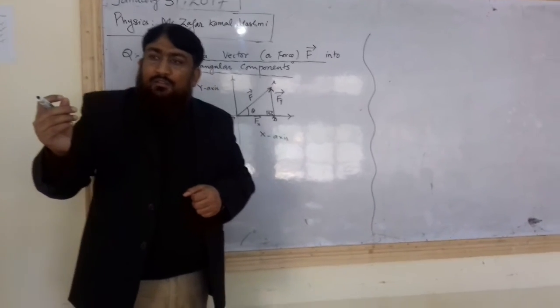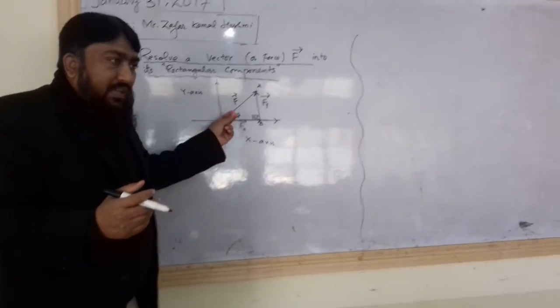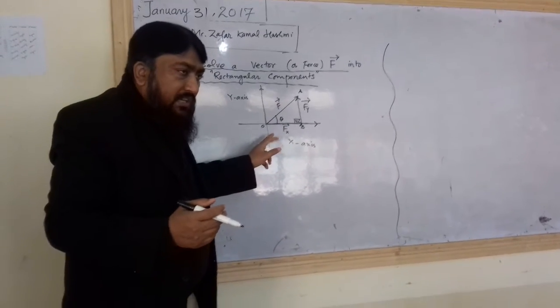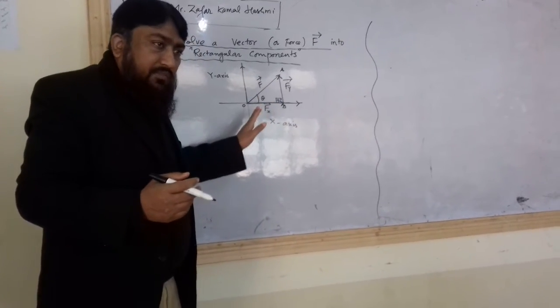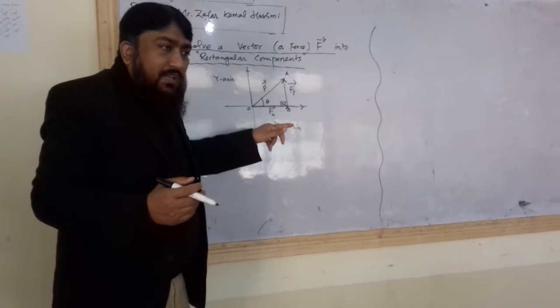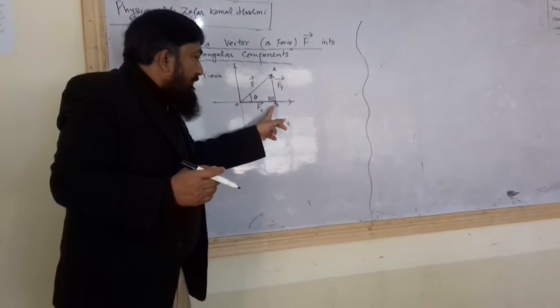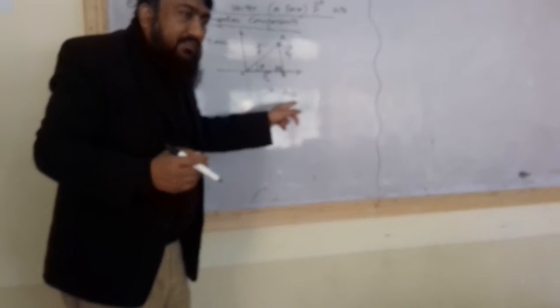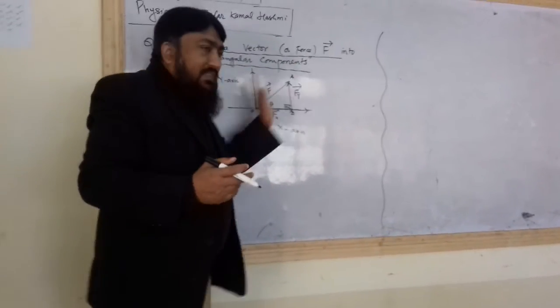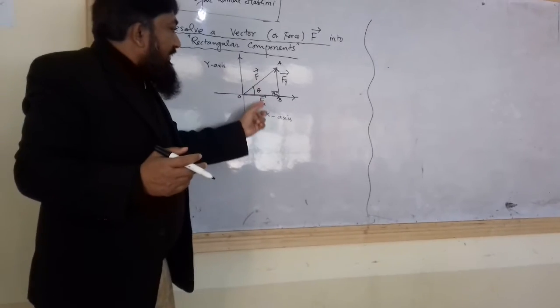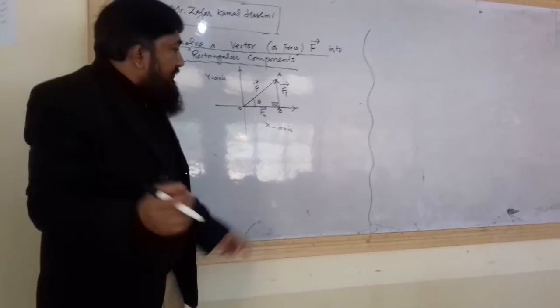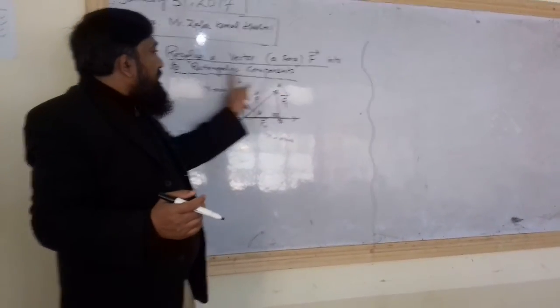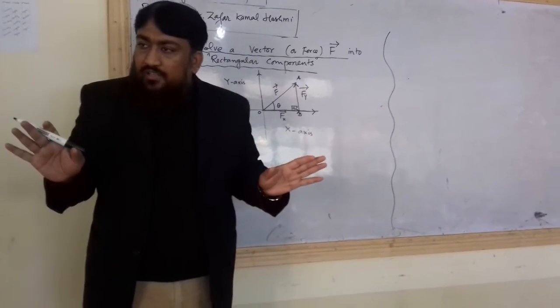So boys, we in two steps elaborated this. This is a vector F shown by line OA making an angle theta with X axis. So first step, we draw the perpendicular. And third step, we put arrows. Putting arrows means we consider OB and BA as vectors. And third step, we said that this is resultant and these are two components. And we proved because the angle between Fx and Fy is 90 degree, they will be rectangular components. So is that clear?